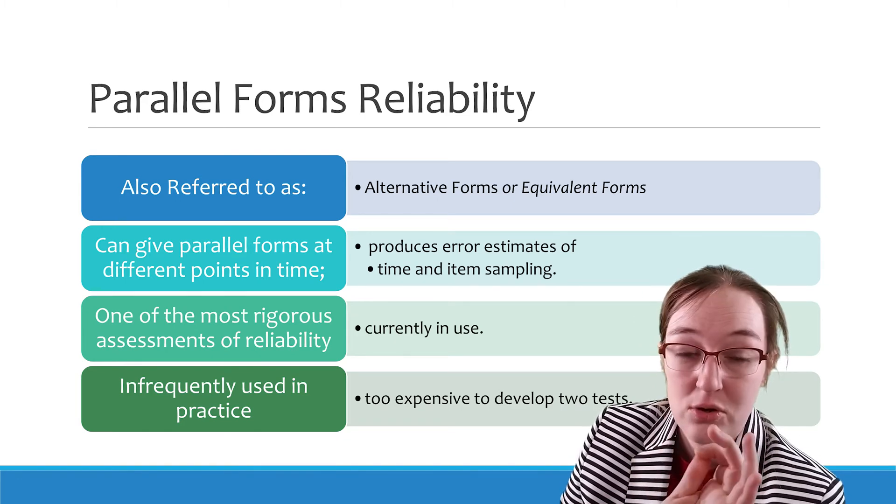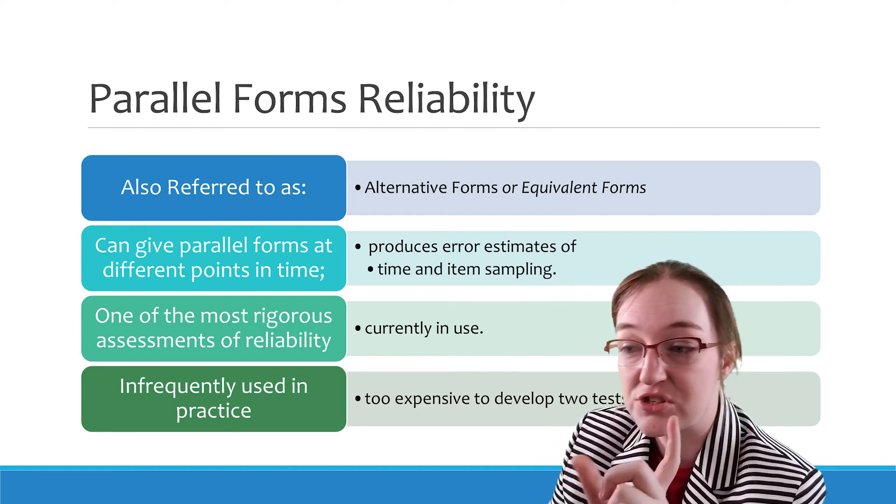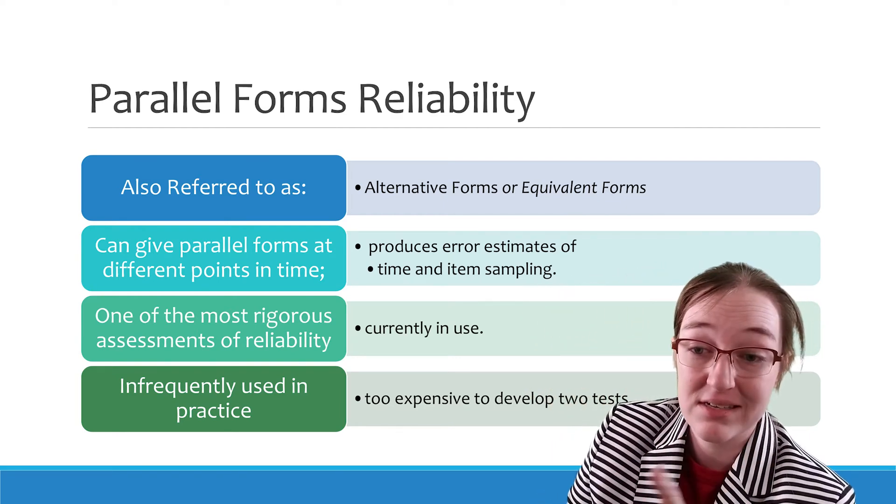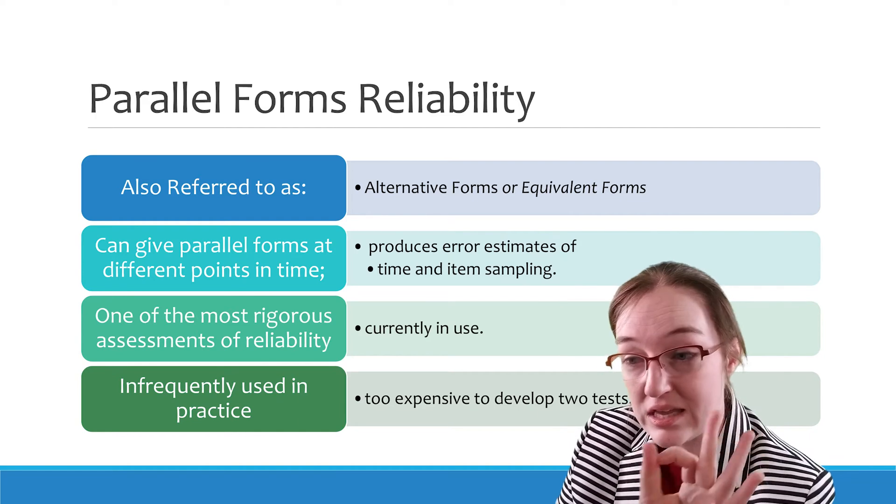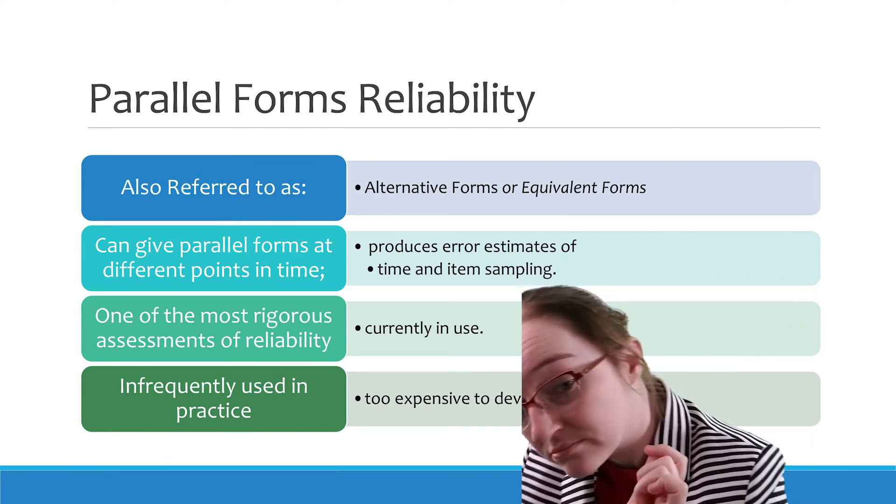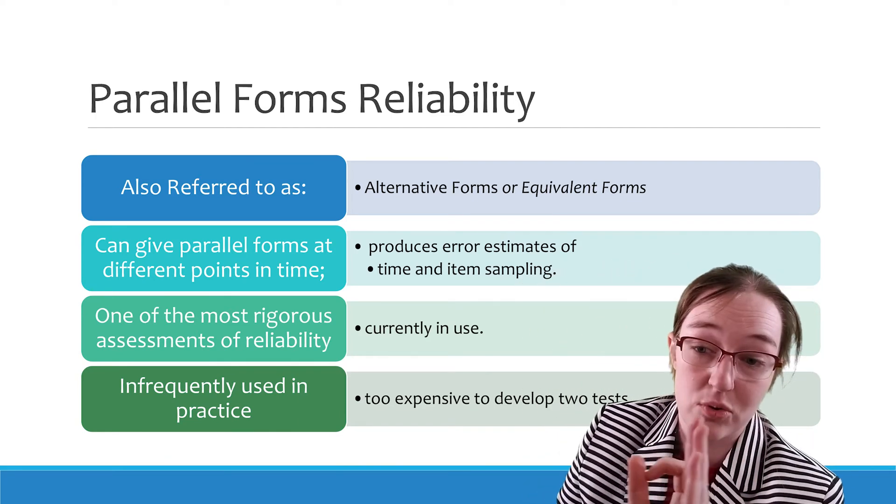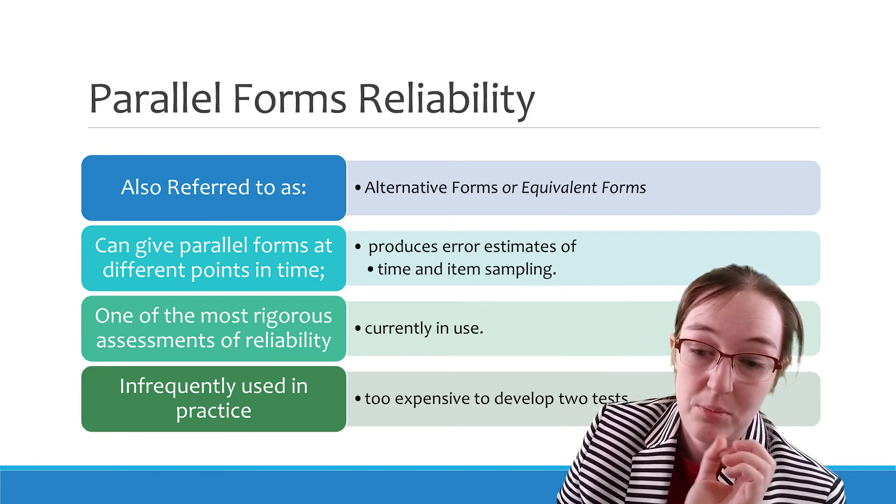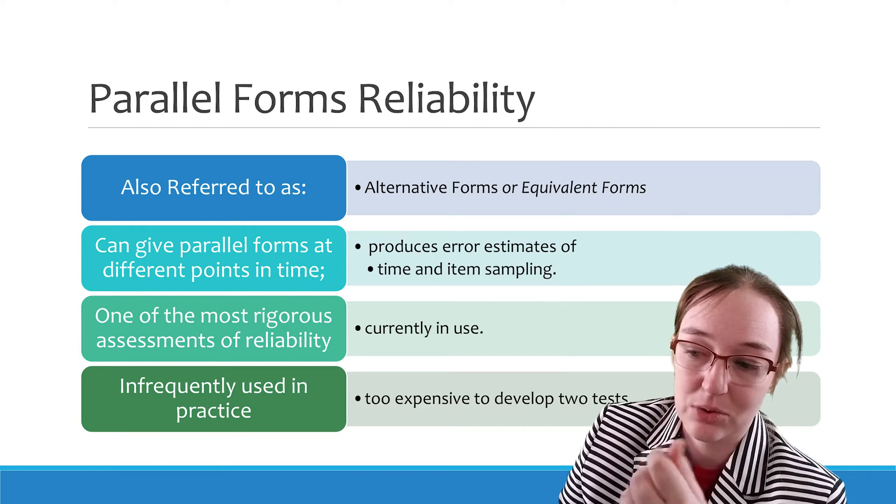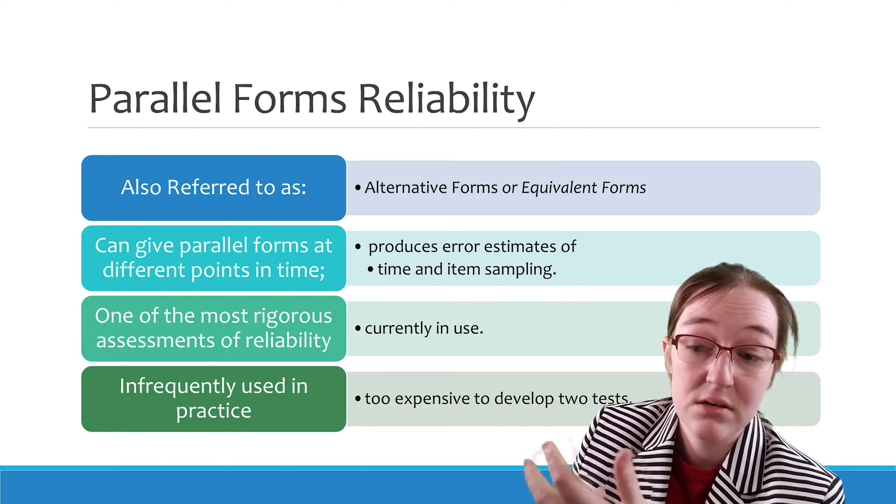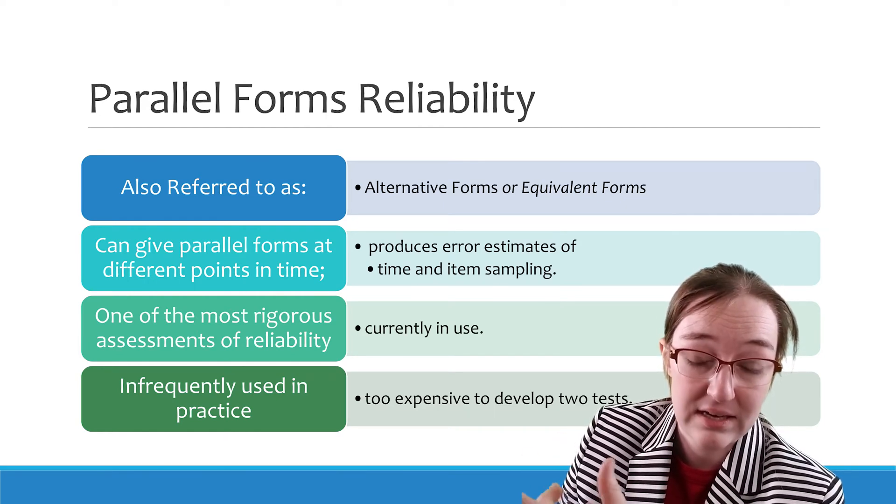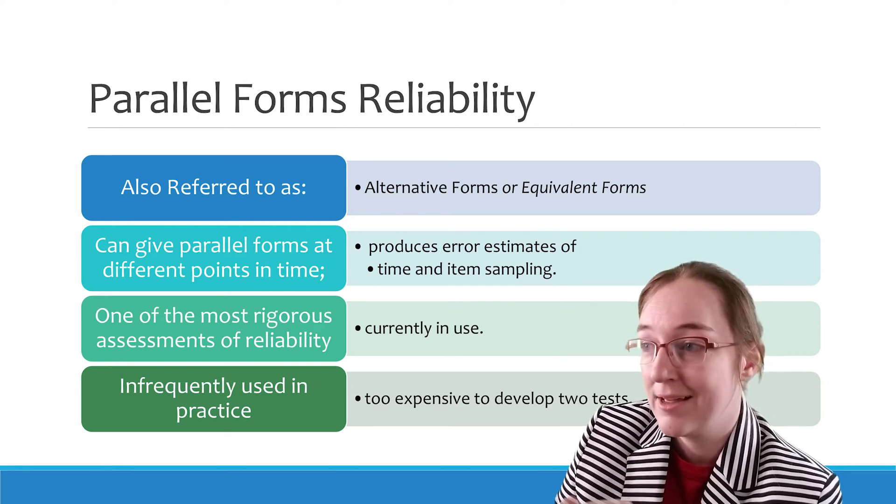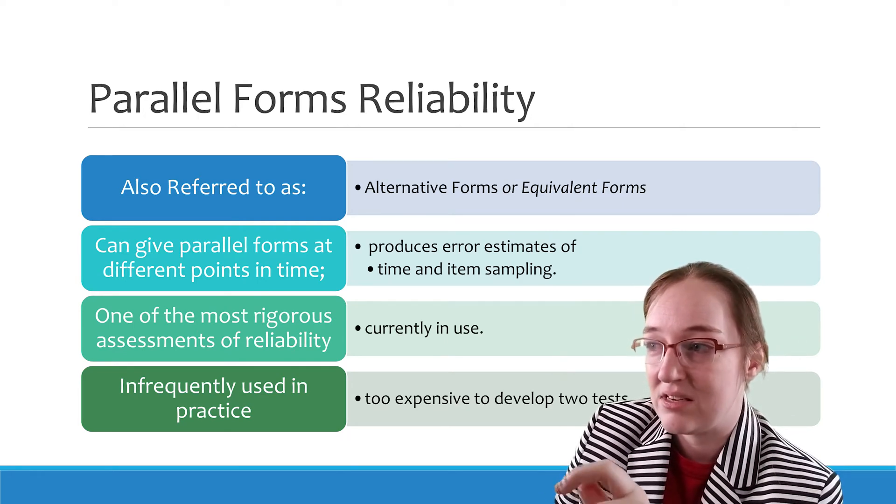So parallel forms exist when for each form, the means and variances of the observed test scores are equal. In theory, the means of the scores compared on parallel forms correlate equally with the true score. More practically, scores obtained on parallel tests are expected to correlate equally with a third measure.